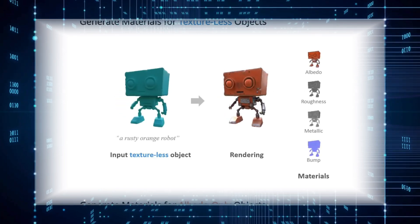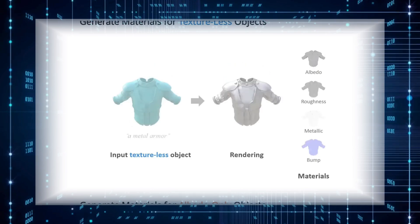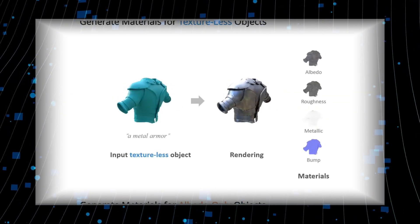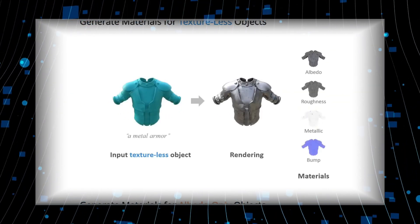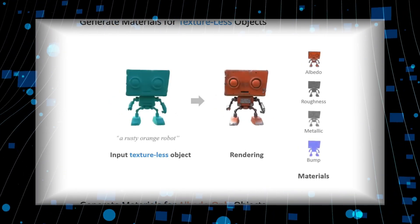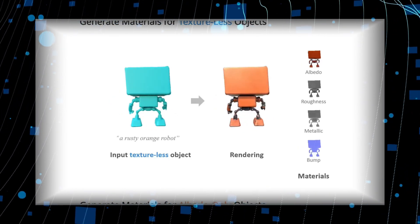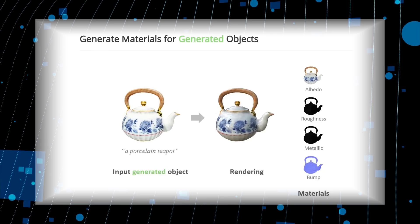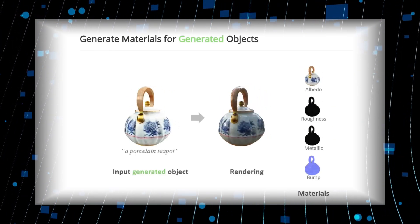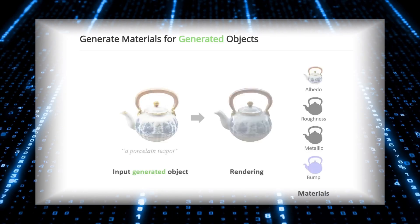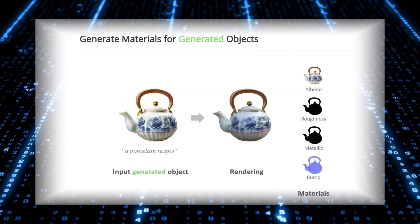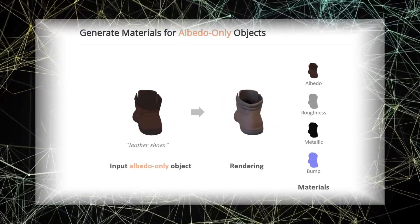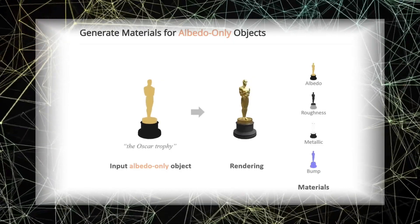Here's how it works. Start with a blank 3D model and a text prompt. For example, input 'metal armor' and the AI generates shiny, metallic-looking armor. Say you want a rusty orange robot — the AI will create a robot with a convincingly rusted surface. If you have a porcelain teapot that doesn't quite look realistic, just provide the right prompt and Material Anything transforms it. Change textures easily: whether you want wood, gold, or stone textures, the AI adjusts the albedo, roughness, metallic, and bump properties based on your description.